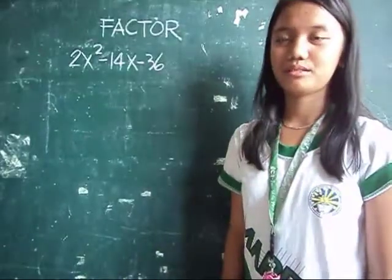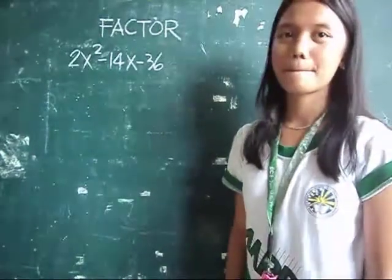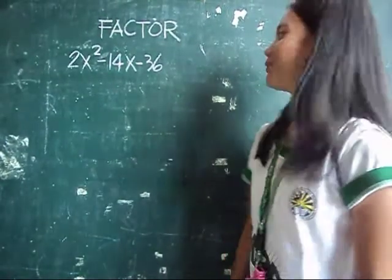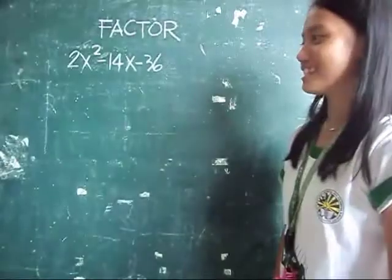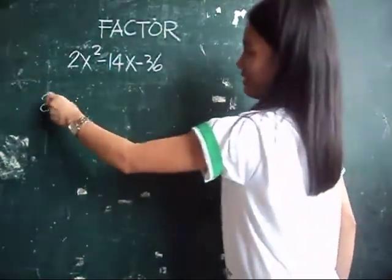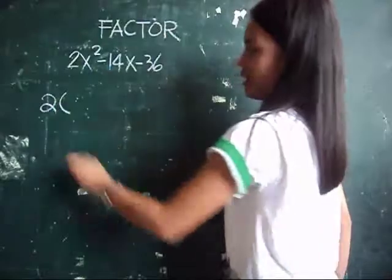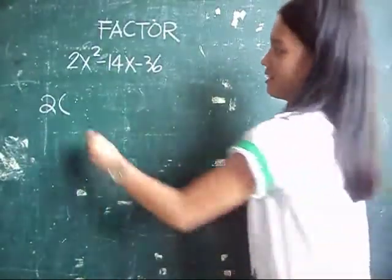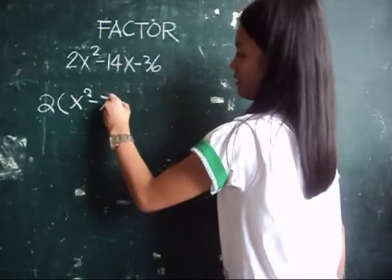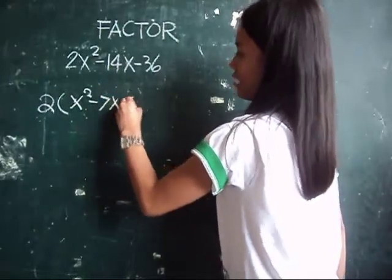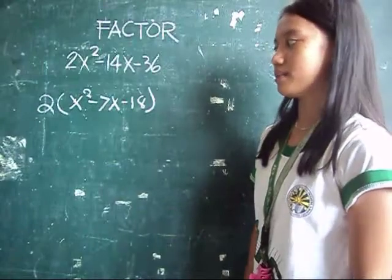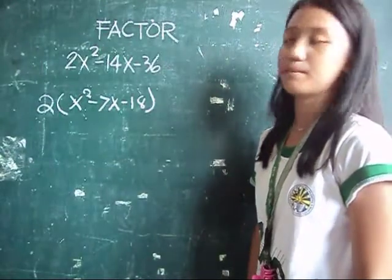Factor 2x squared minus 14x minus 36. We factor by first factoring out 2. The other factor is x squared minus 7x minus 18. But we can still factor x squared minus 7x minus 18.